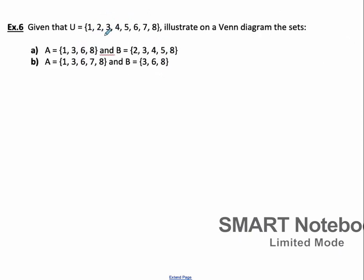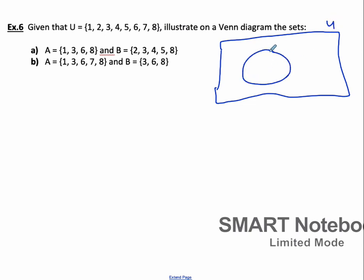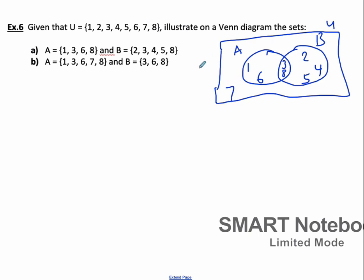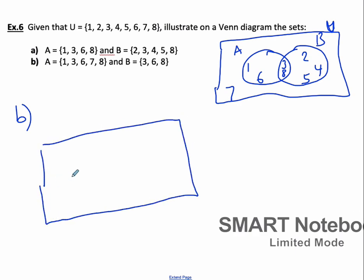Next, we have the universal set and we're going to make a Venn diagram representing this. The universal set is a big rectangle, and A and B we represent with circles that may have an intersection. In A we have 1. In B we have 2. 3 is in common for both, so that goes in the intersection. 4 is just in B, and 5 is just in B. 6 is over here, and 8 is in the intersection. The universal set has other numbers too — 7 is out here. Let's double check: there should be 8 numbers — 1, 2, 3, 4, 5, 6, 7, 8. Good.